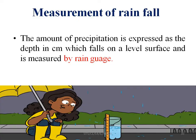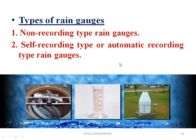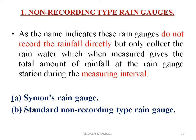There are different types of rain gauge. There are two main types: the first is the non-recording type rain gauge, and the second is the self-recording or automatic recording type rain gauge. As the name indicates, non-recording rain gauges do not record the rainfall directly.